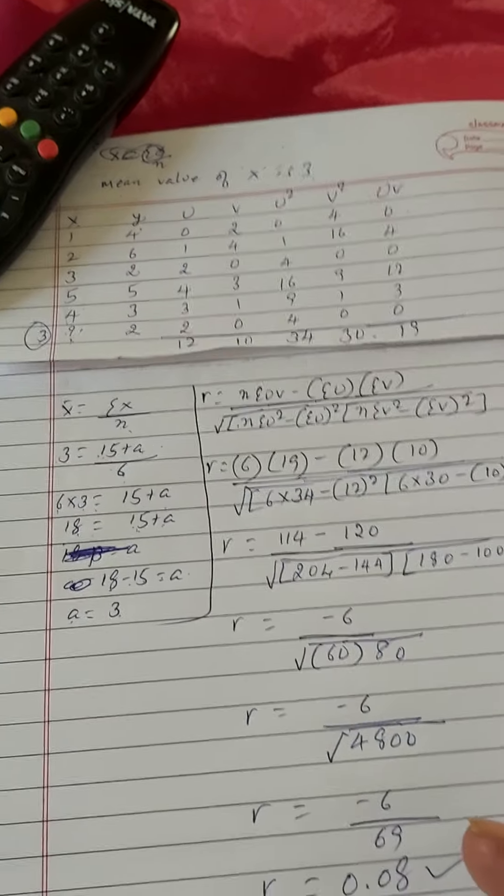Now what we have to do in RHS of this formula - the denominator is 6, that should be taken to LHS side, left hand side. When we take 6 to left hand side it should be multiplied by the value of 3. So therefore 6 into 3 is equal to 15 plus a. By multiplying 6 into 3 we get 18. 18 is equal to 15 plus a.